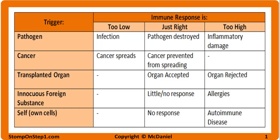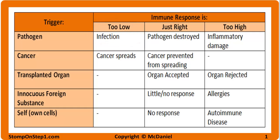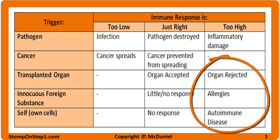In our last video, we talked about immunodeficiencies, which is an example of when the immune system is too weak and makes the body susceptible to infection. These next couple of videos in the section are going to cover examples of when the immune system is too strong.